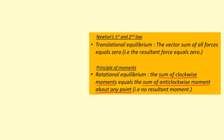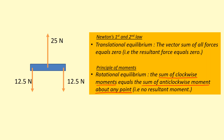This is what we call the principle of moments. This example shows an object which is in both translational and rotational equilibrium, because the total upward force is 25 newtons and the total downwards is also 25 newtons. If we consider moments about the middle, we can ignore the 25 newtons force. This 12.5 newtons force is going to cause it to spin clockwise, and this one is going to cause it to spin anticlockwise, so the total turning effects cancel out and it remains in rotational equilibrium.